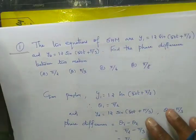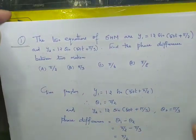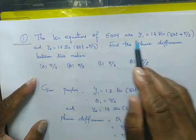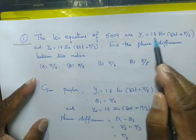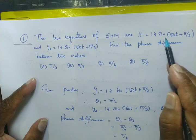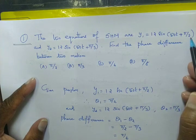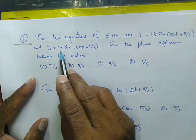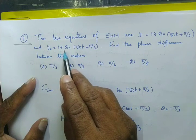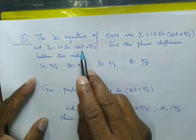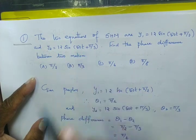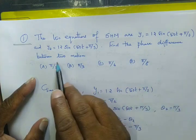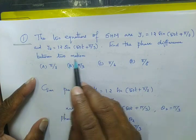The two equations of SHM are: y1 equal to 12 sin of 50t plus pi by 2, and y2 equal to 12 sin of 50t plus pi by 3. Find the phase difference between the two motions.